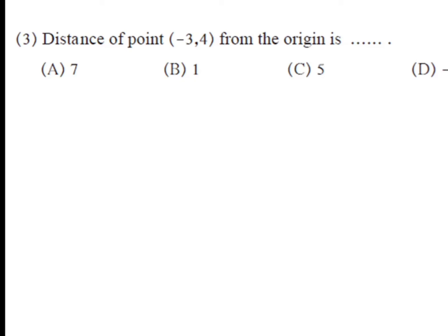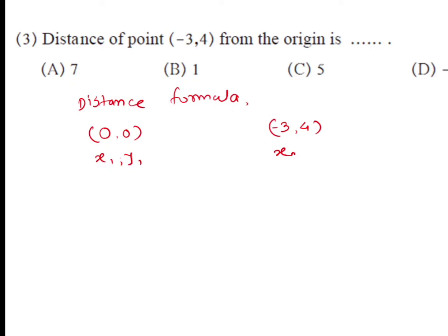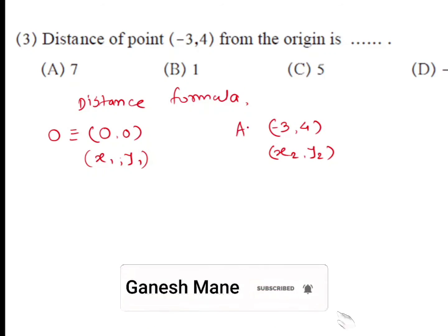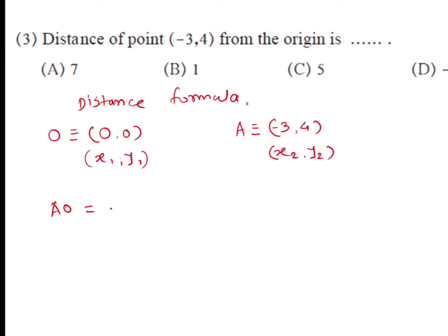Next question: the distance of point (−3, 4) from the origin is how much? We use the distance formula. The coordinates of the origin are (0, 0) and the point is (−3, 4). Let the origin be (x₁, y₁) = (0, 0) and point A be (x₂, y₂) = (−3, 4). By the distance formula: AO = √[(y₂ − y₁)² + (x₂ − x₁)²].